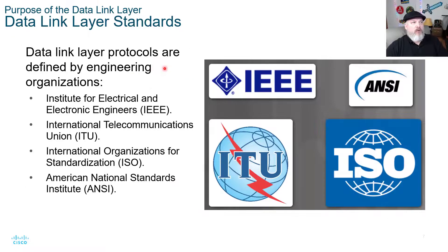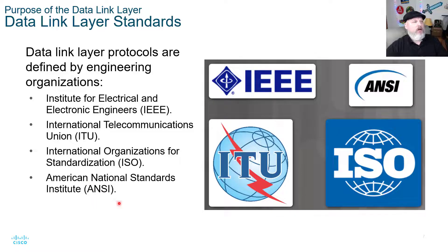Data link layer protocols are defined by engineering organizations: IEEE, ITU, ISO, and ANSI. You've seen these in previous modules, and links to Wikipedia articles will be in the description below so you can find more information about them.